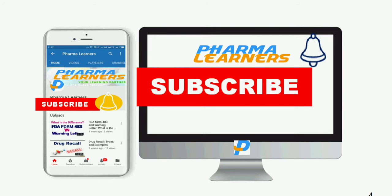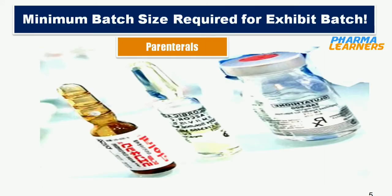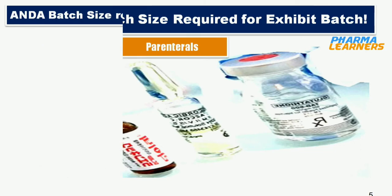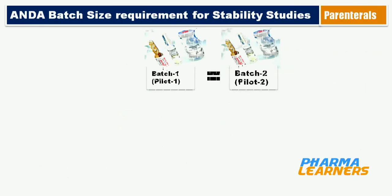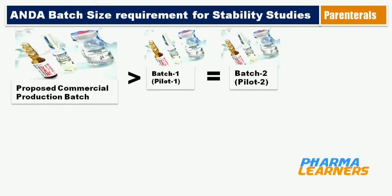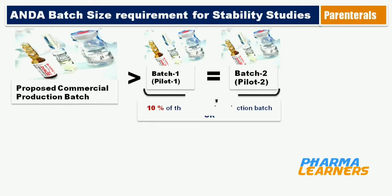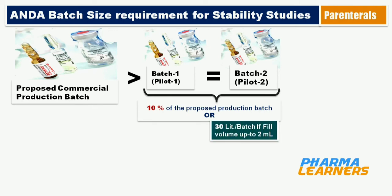Now let's start with parenterals. According to FDA guidelines, 2 out of 3 batches should be a minimum of 10% of the proposed commercial batch. There are 3 conditions for batch size based on fill volume.